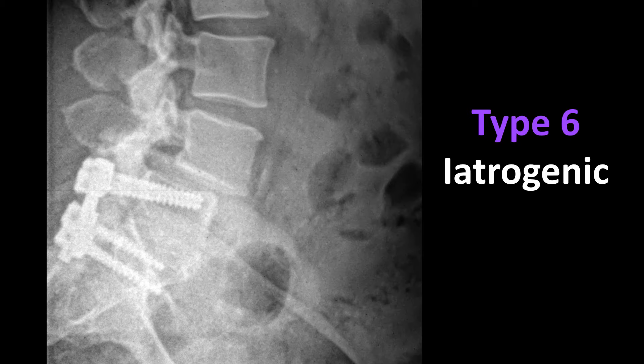Type 6 is post-surgical or iatrogenic spondylolisthesis. This usually occurs where there is some type of surgical fusion — in this case a posterior lumbar interbody fusion at L5-S1 stabilizing that region — but now there is excessive motion at L4 resulting in an anterolisthesis. This may be due to severe degenerative arthrosis or a developing pars defect, but it is usually post-surgical in etiology.